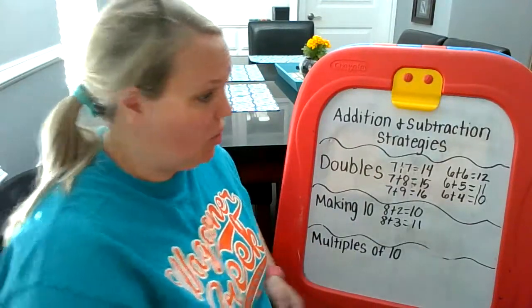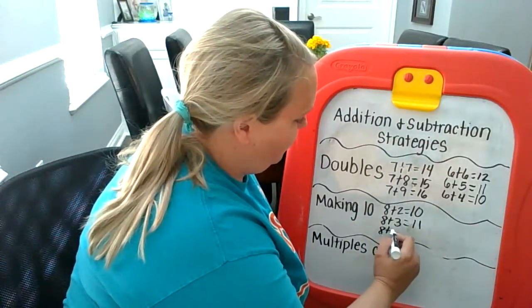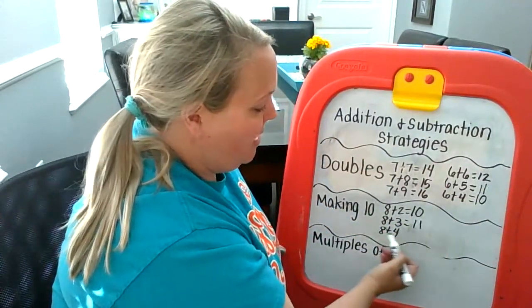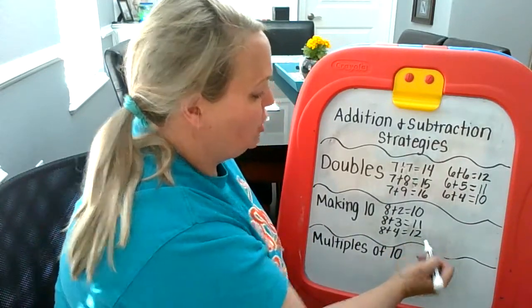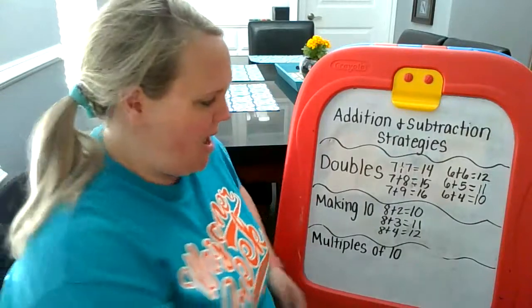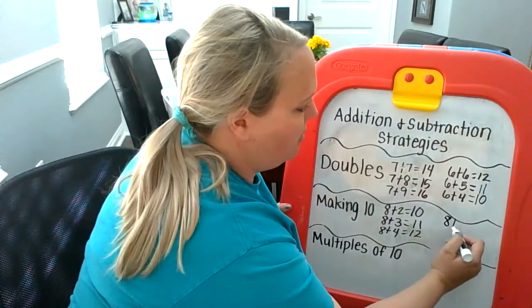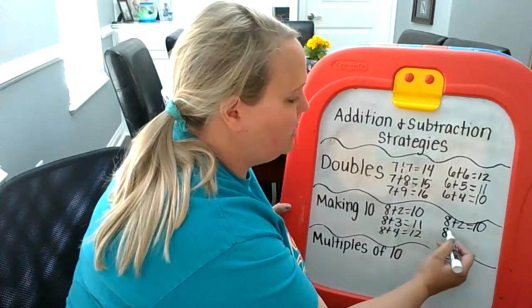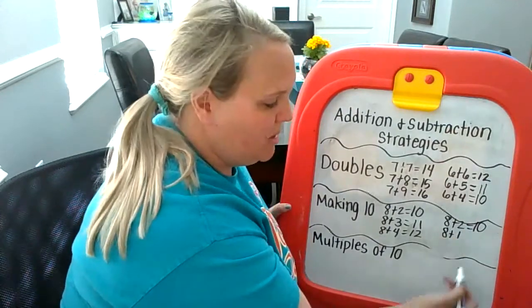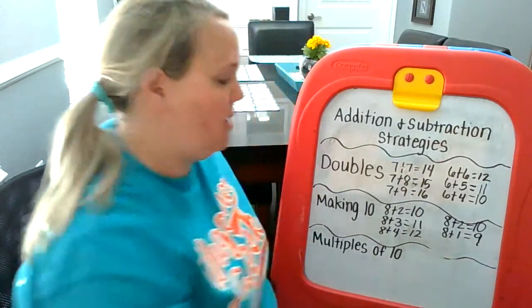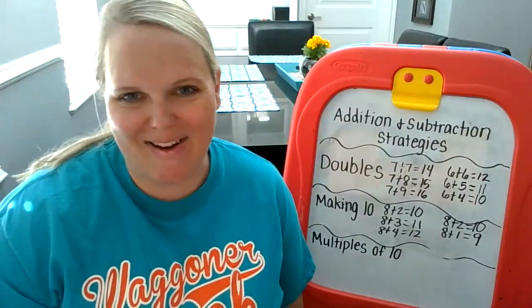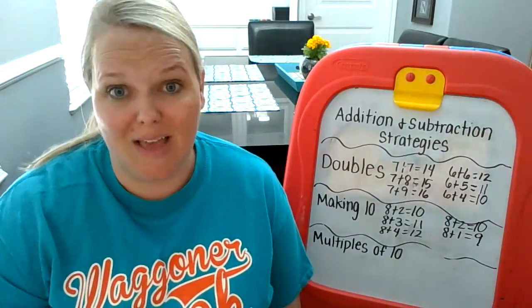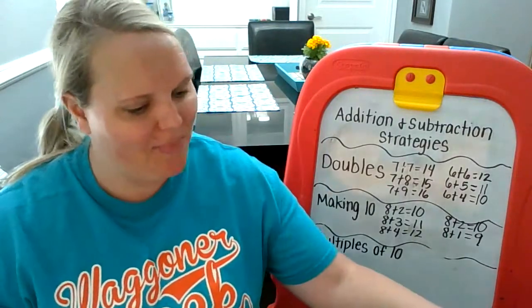And then I can even do 8 plus 4. I know that that's just one more. So if 8 plus 2 is 10 and 8 plus 3 is 11, then 8 plus 4 is going to equal 12. And I can do it the same way if a number's smaller. If I know that 8 plus 2 is equal to 10, and somebody said, what's 8 plus 1? I would say, that's just one less than 2, so the answer would be one less than 10, which would be 9. So I also want you to make some flashcards for all of the numbers that have a sum of 10.